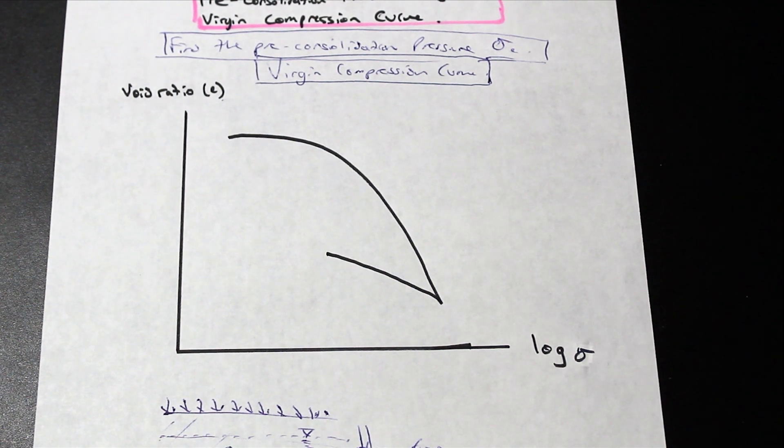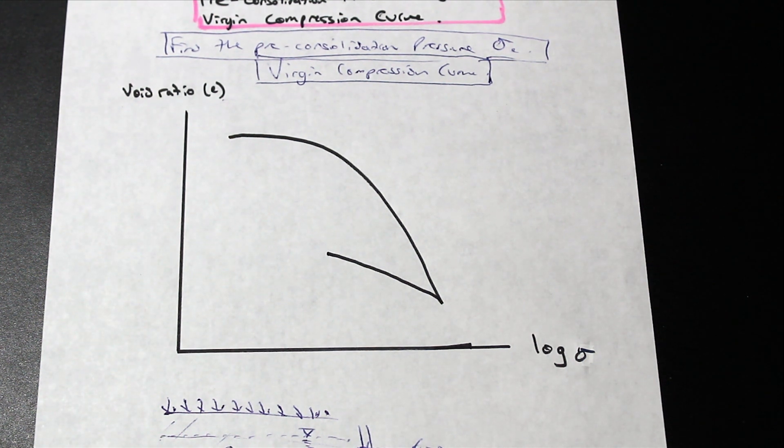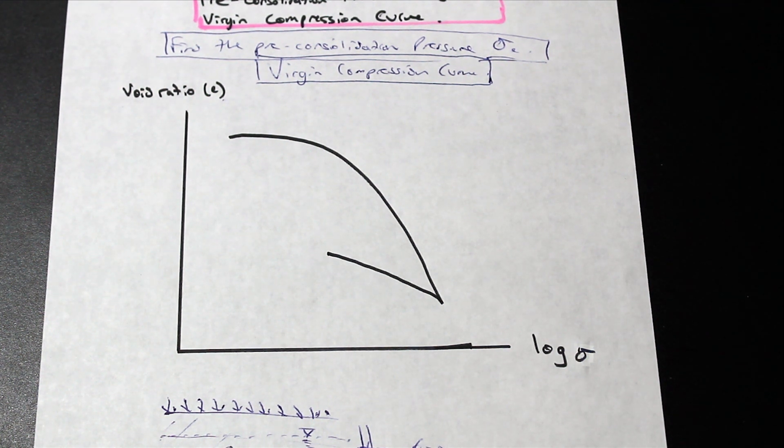So let's take a look at this virgin compression curve. So what does this curve mean? Well, so at the end of consolidation, you'll probably, in your labs in geotechnical engineering, you'll do the consolidation test. Essentially what it is, it's a period of 24 hours. You're periodically taking settlement readings over time, and you're slowly,